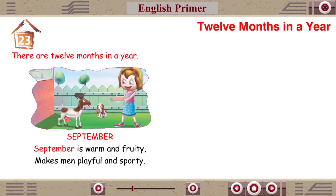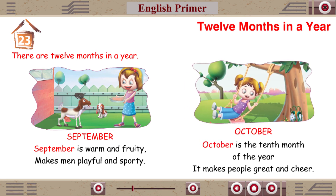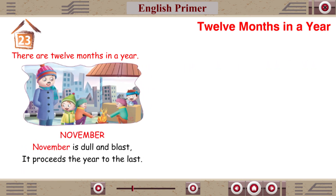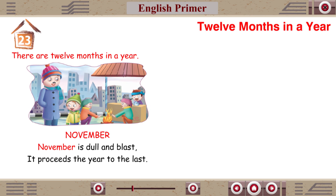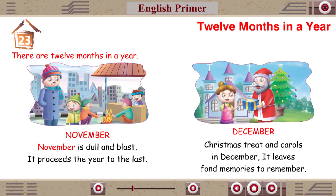September is warm and fruity; it makes men playful and spotty. October is the tenth month of the year; it makes people great and cheerful. November is dull and blessed; it precedes the year to the last. Christmas treats and carols in December; it leaves fond memories to remember.